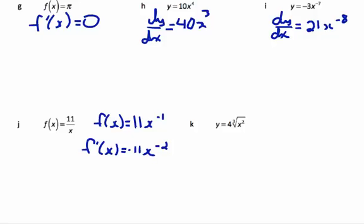With k, again, we're looking at a root sign, so we need to change that root into an exponent. It's a little more complicated root than a square root, but what we have is a 3 in the notch, that becomes the denominator of the exponent. 2 on the x becomes the numerator, so what we have is 4x^(2/3).